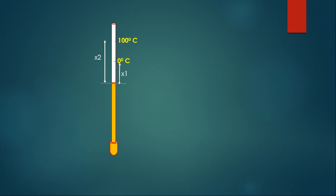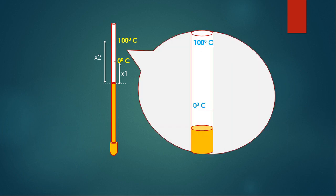I can divide the region between 0 degrees Celsius and 100 degrees Celsius into 100 equal points and mark each as 1 degree Celsius. For simplicity I am marking it as 20, 40, 60, and 80 degrees Celsius — equally spaced markings.